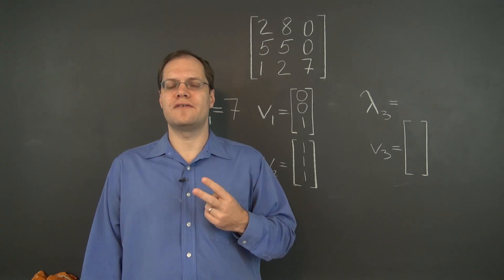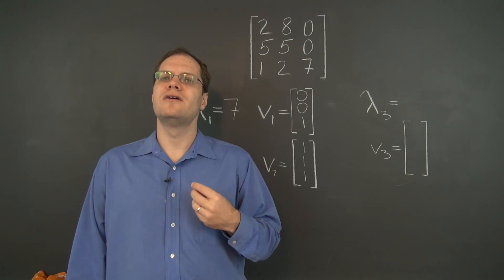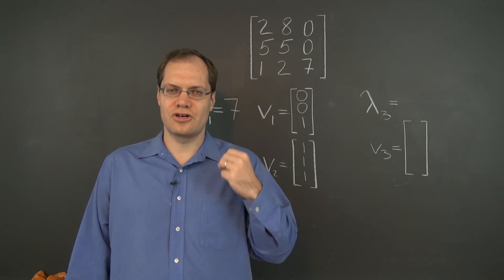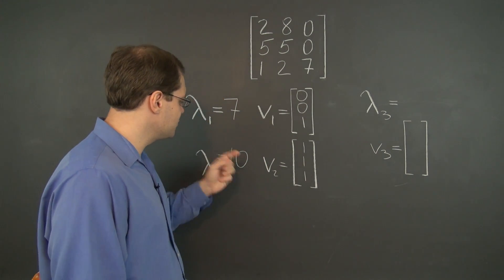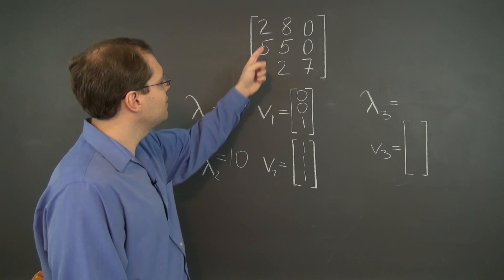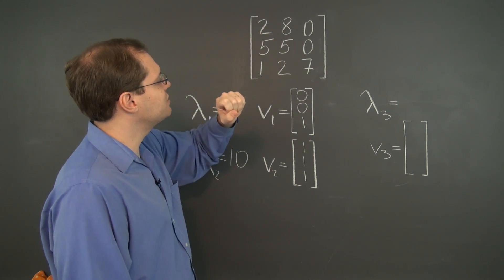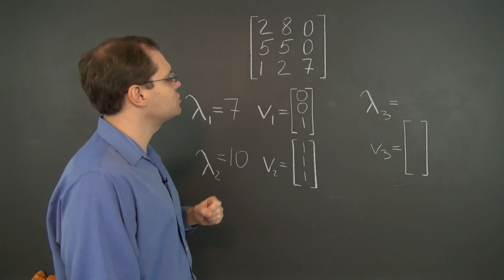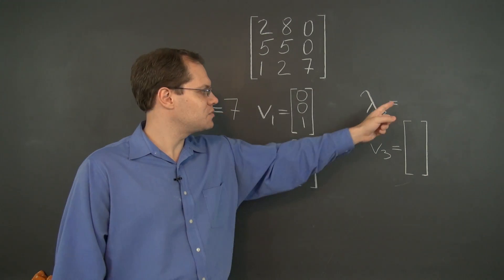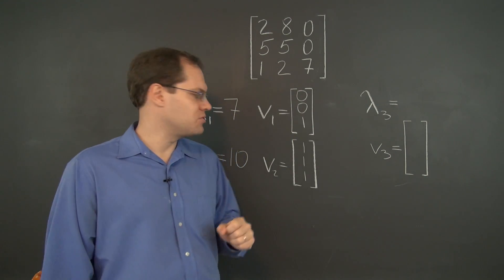So we know two of the eigenvalues, two out of three, so the trace will tell us the third. These two eigenvalues add up to 17, and all of them together add up to the trace of this matrix, which is 14.